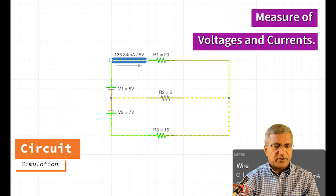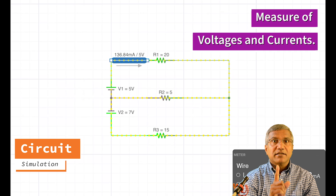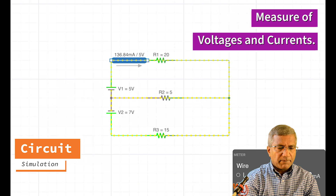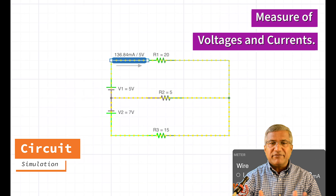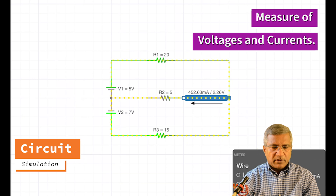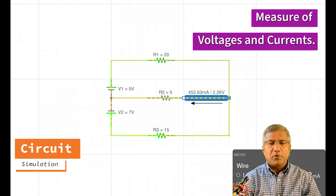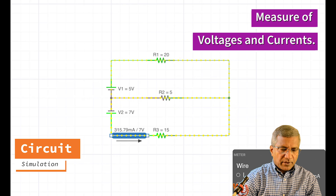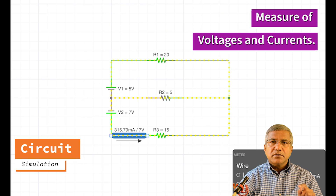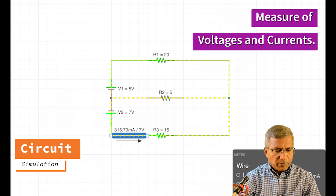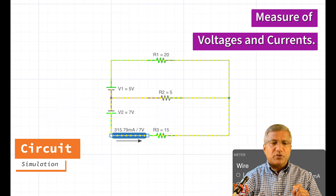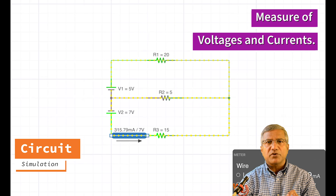With the circuit simulator switched on, VA is 5 volts. I1 is 0.137 ampere. VB is 2.26 volts. I2 is 0.452 ampere. For the final measurement, VC is 7 volts, as expected. And I3 is 0.316 ampere.